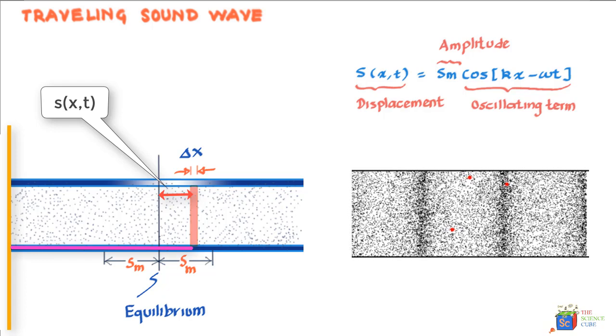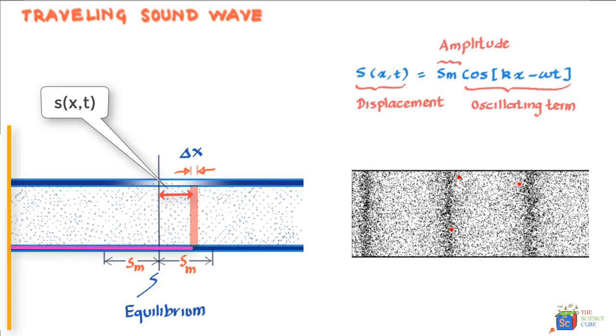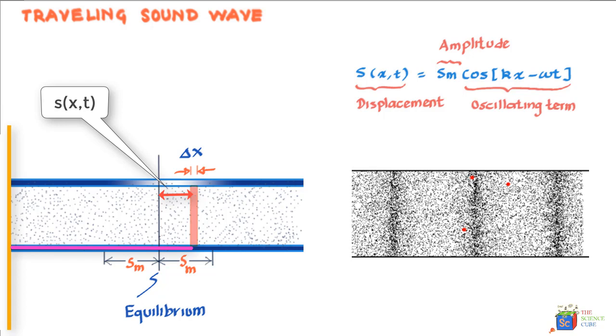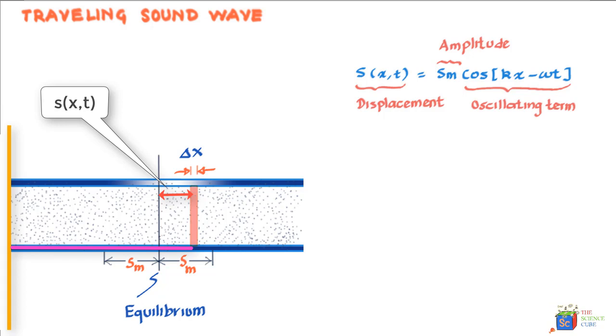In a setup like this, as the wave moves ahead, pressure of air at any position x varies sinusoidally, and the equation for pressure at any point can then be written as Δp(x,t) is equal to Δp_m sin(kx - ωt).